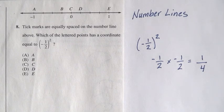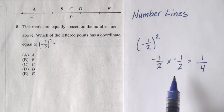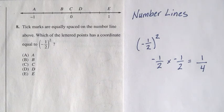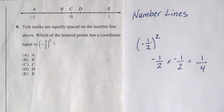So quick sanity check: should we have gotten a positive number? Well, a negative times a negative is a positive, so yes, that makes sense. The answer is 1 fourth.